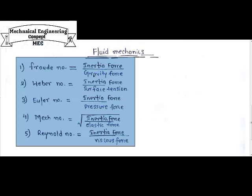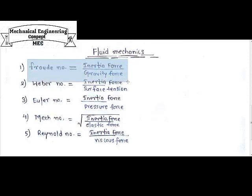Now the basic question is the denominator part — what comes in the denominator for each of these numbers? First, I am considering the Froude number. Here the numerator is fixed as inertia force. The denominator is gravity force. How to remember? In the Froude number, the denominator is the gravity force.